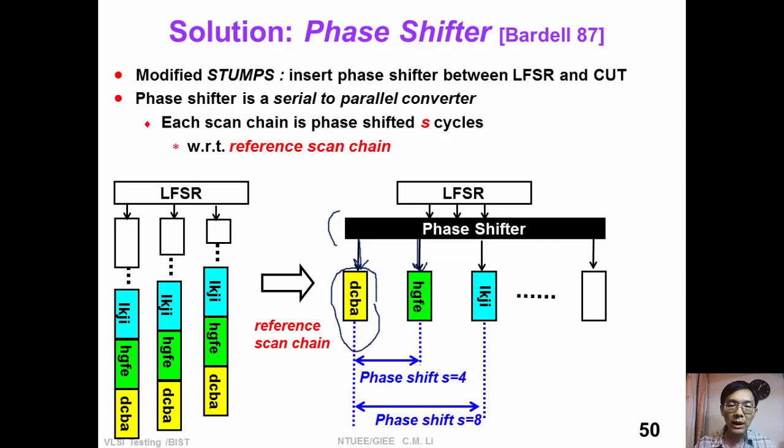Suppose the yellow scan chain is the reference scan chain. And the second scan chain, the green one, is shifted by four cycles with respect to the reference scan chain. The third scan chain, the blue scan chain, is phase shifted by eight cycles.